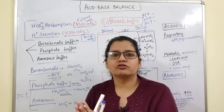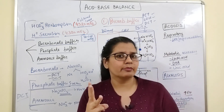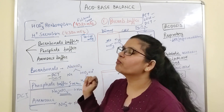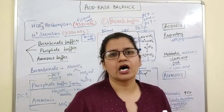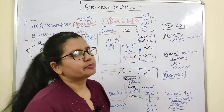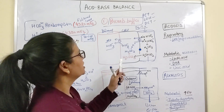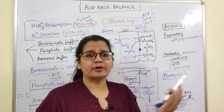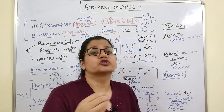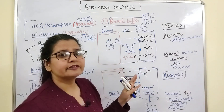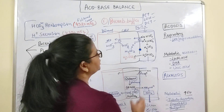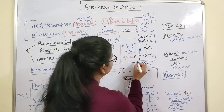To answer how H+ secretion and bicarbonate reabsorption occur, you categorize renal buffers into three: the bicarbonate buffer system, the phosphate buffer system, and the ammonia buffer system. The bicarbonate buffer system mostly occurs in the PCT, as we've seen in the renal physiology video series.